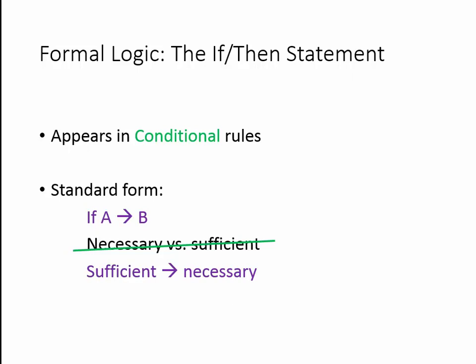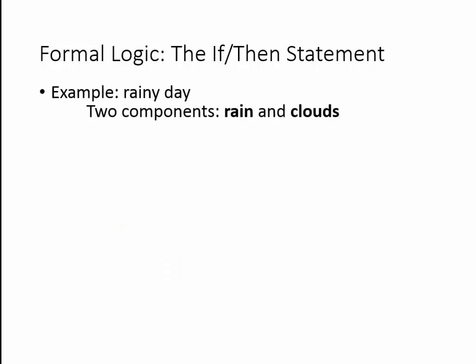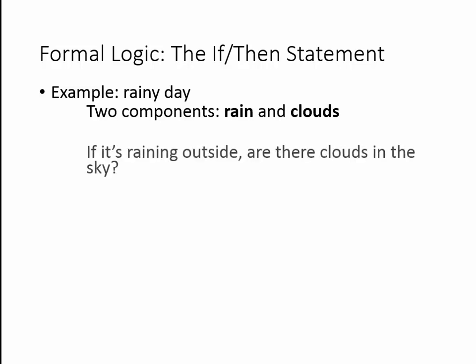The best way to think of this is to go to a real-world example. We're going to look at a rainy day. On a rainy day there are two components: rain and clouds. What we want to do is take those two components and ask ourselves two basic questions about them. The first one: if it's raining outside, are there necessarily clouds in the sky?